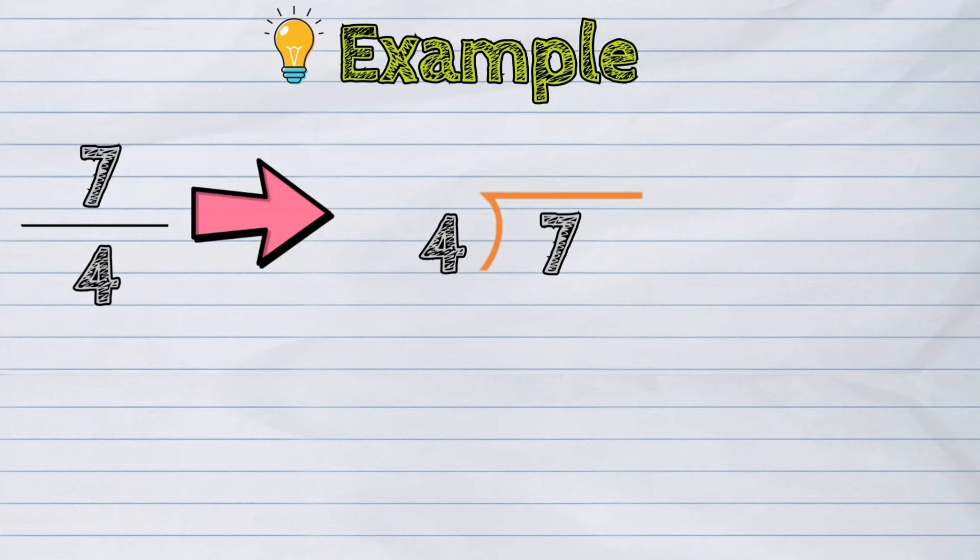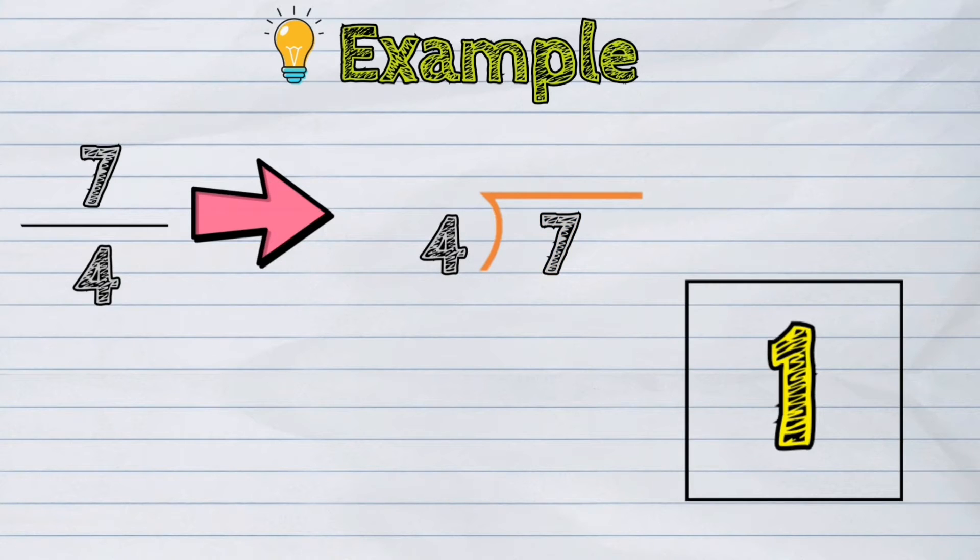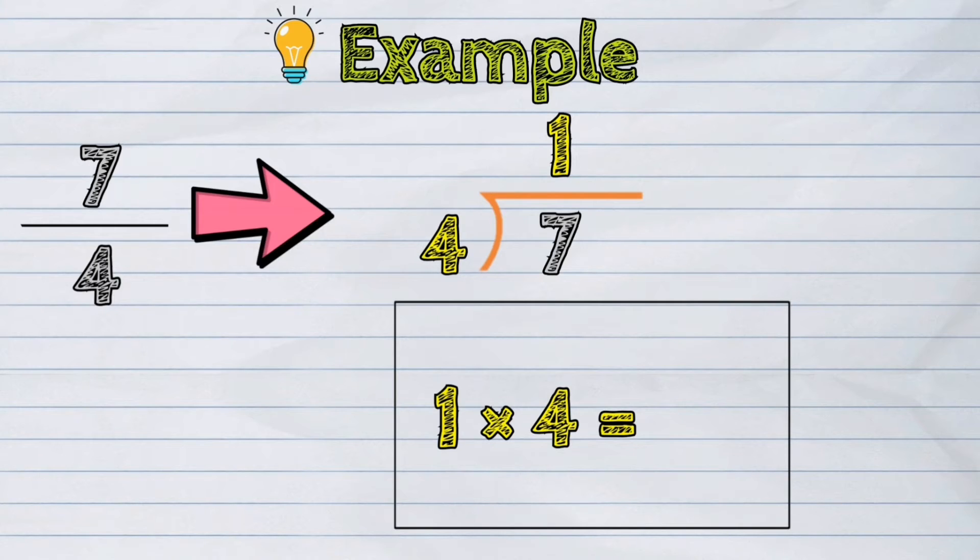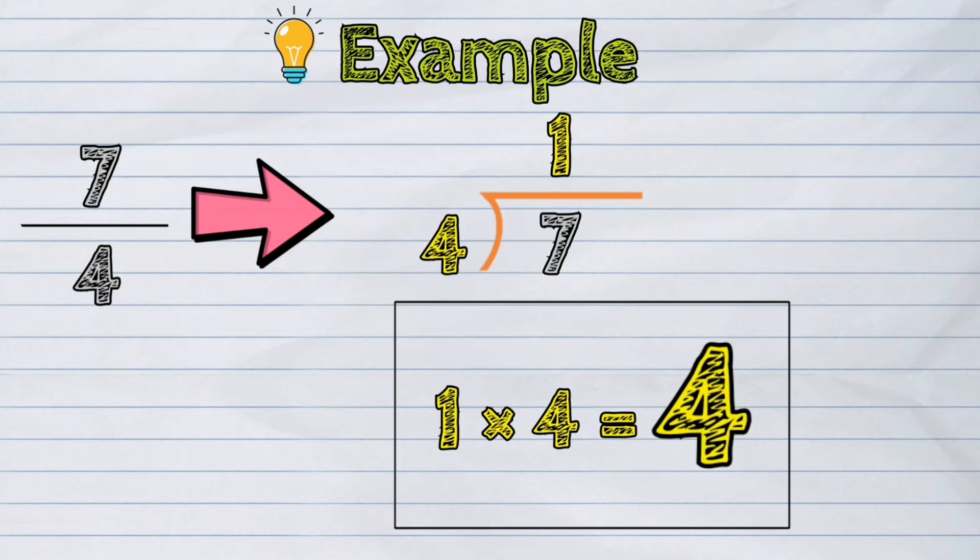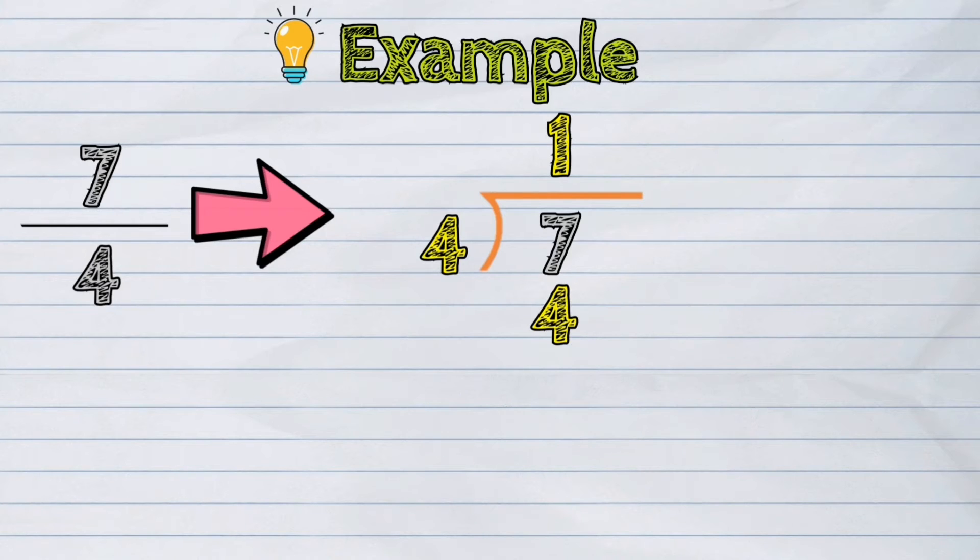How many times will 4 go into 7? The answer is only 1. So we will write 1 above the quotient line. And then we will multiply the answer and the divisor which is 4. 1 times 4 is 4. We write 4 under 7. The next process is subtraction. 7 minus 4. The answer is 3.